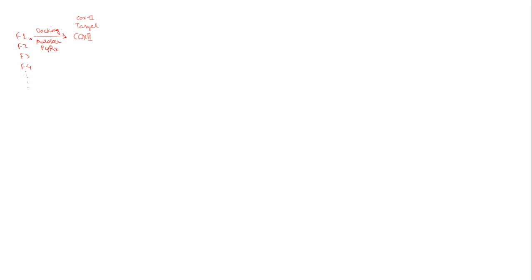As the output of this molecular docking, you ended up generating a docking log file — what we call the .dlg file. You got a DLG file for flavonoid 1, a DLG file for flavonoid 2, a DLG file for flavonoid 3, and so on. The very first task was to separate the DLG files into a separate folder for each flavonoid result obtained from molecular docking.